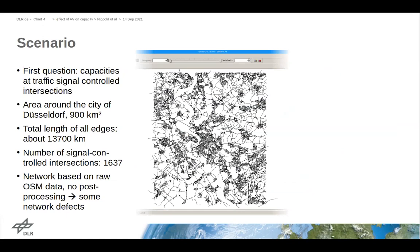The area under investigation is the city of Düsseldorf, highlighted in blue, and its surrounding areas where commuting is mostly taking place. It's a rather large area, around 900 square kilometers with a road network of almost 14,000 kilometers and over 1,600 signal-controlled intersections. For our analysis we use raw OSM data.